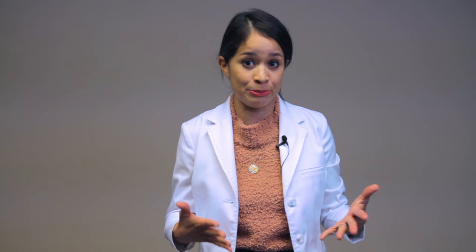Moving on to the simple mask. This has a mask that fits over the nose and mouth and has holes on the side referred to as exhalation ports to allow for exhalation of air to prevent suffocation. The range of oxygen can be 40 to 60% — a minimum flow rate of 40% equals about 5 liters per minute, or 55 to 60% would equal 8 liters per minute. This mode is delivered temporarily after surgery while in recovery or when there is a rapid change in the patient's oxygenation. As an RN, assess for signs of respiratory distress such as use of accessory muscles, nasal flaring, a prolonged capillary refill greater than three seconds, or the patient may report dyspnea or feeling short of breath.